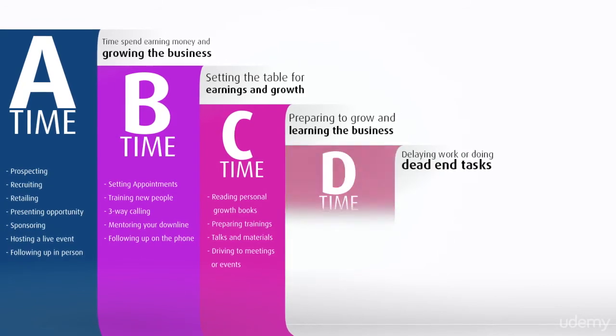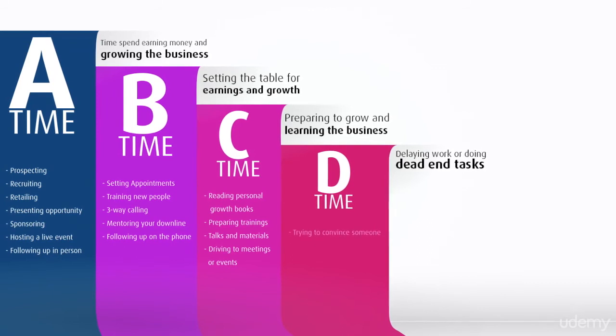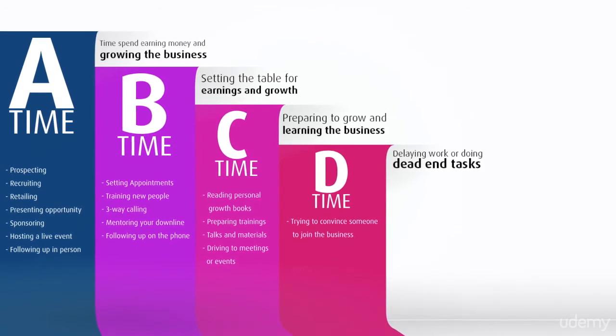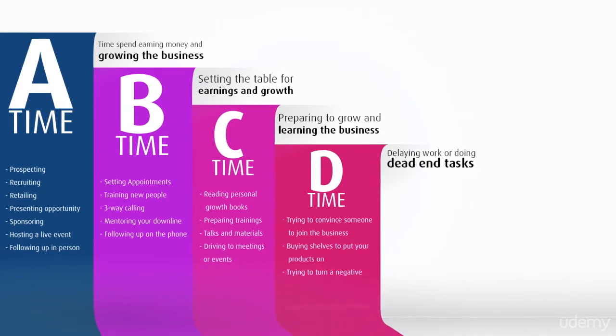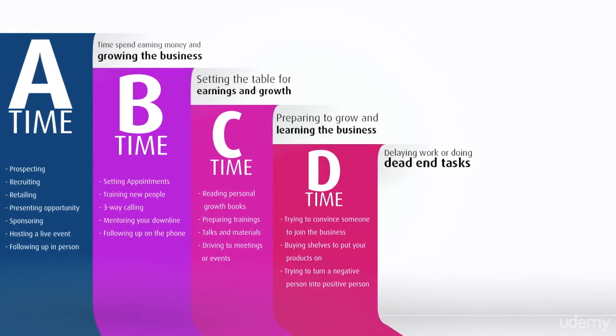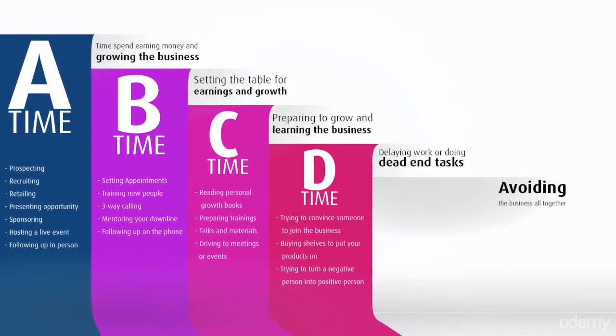D time is delaying work or doing dead end tasks. Activities in D time include trying to convince someone to join you in the business, buying shelves to put your product on, trying to turn a negative person into a positive person. And the lowest grade would be E time, where you avoid the business altogether.